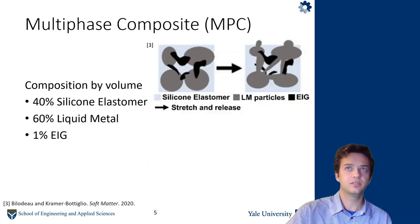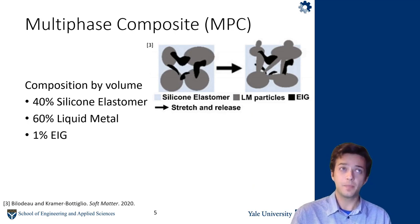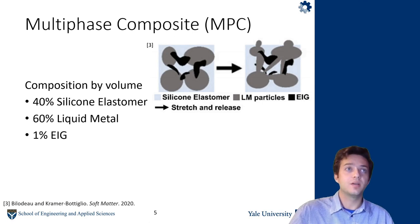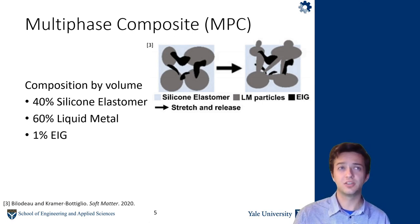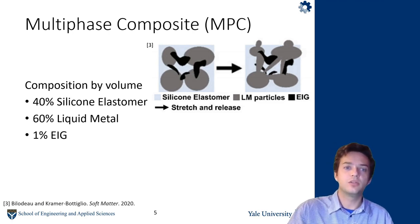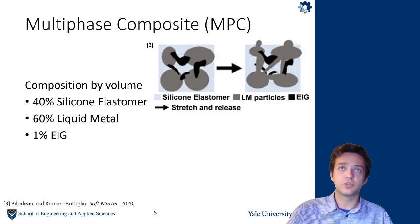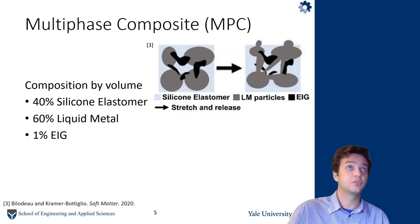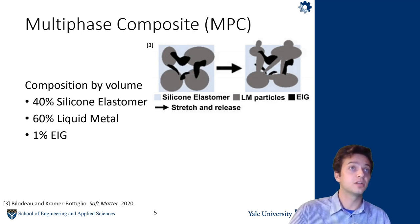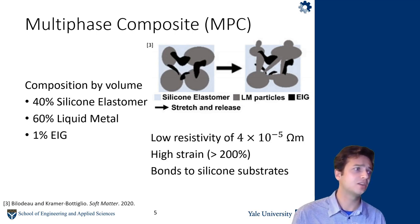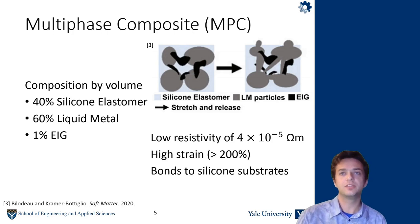So for our electrode material in this work, we use a multiphase composite, which is by volume 40% silicone elastomer and 60% room temperature liquid metal, in this case eutectic gallium indium. That mixture is then mixed with 1% by volume expanded intercalated graphite. And so at first the liquid metal droplets are suspended in a silicon matrix and not in contact. After the composite is stretched for the first time, the EIG particles, which are sharp, create these micro tears in the silicon matrix, so the liquid metal droplets can coalesce and form a conductive network.